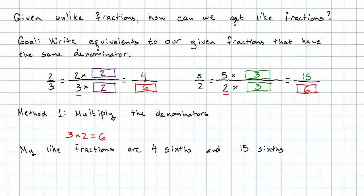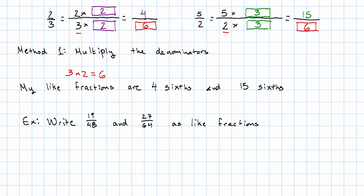Now that works really well when we have nice small denominators like this. Suppose we wanted to write 19 48ths and 27 64ths as like fractions.